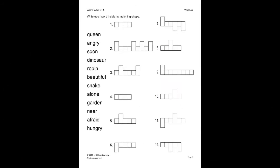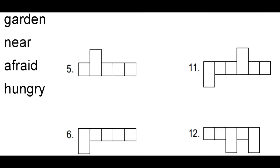Here, the student will write each word inside its matching shape. Let's look at number 11 for example. Number 11 has a long box, two short boxes, a tall box, and two more short boxes. Looking at the words given, we can see that the word garden matches these shapes. So we will cross out the used word and write each letter in its correct place.